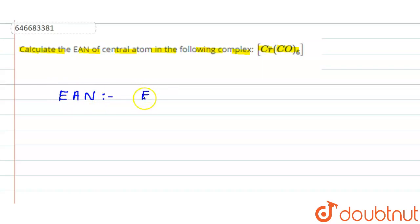The meaning of EAN is effective atomic number. It is called effective atomic number. What is the meaning of effective atomic number? It is the total number of electrons gained by the central atom, or the total number of electrons surrounding the central metal in a complex.